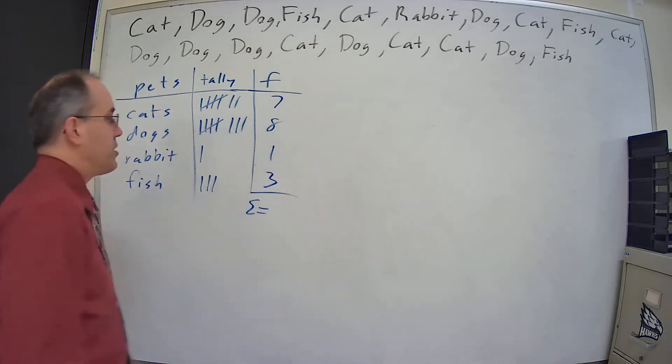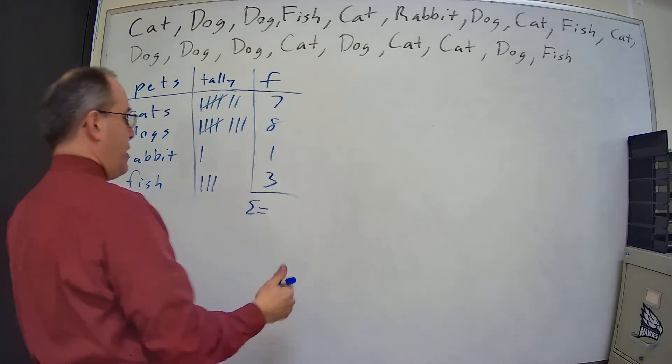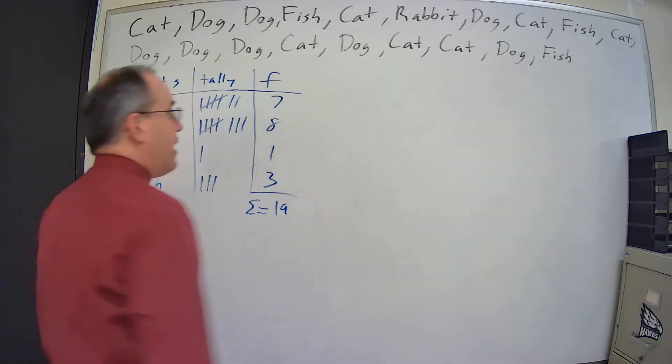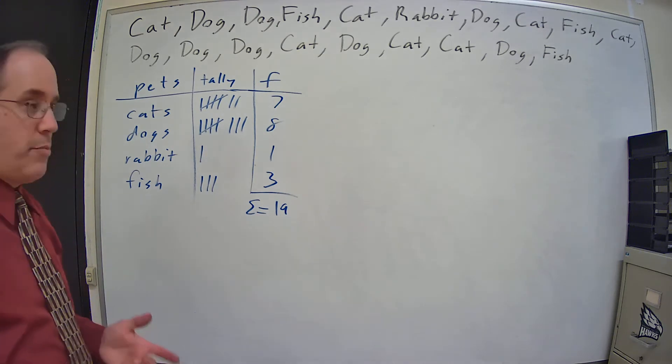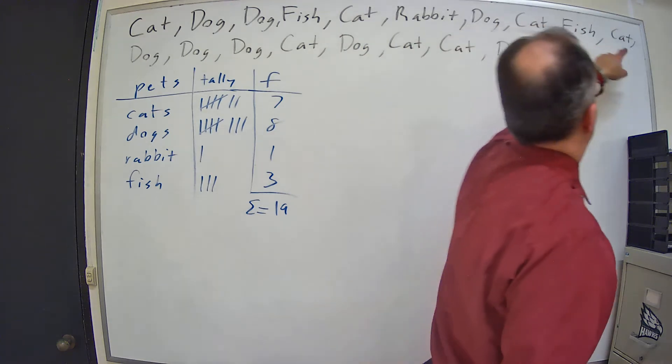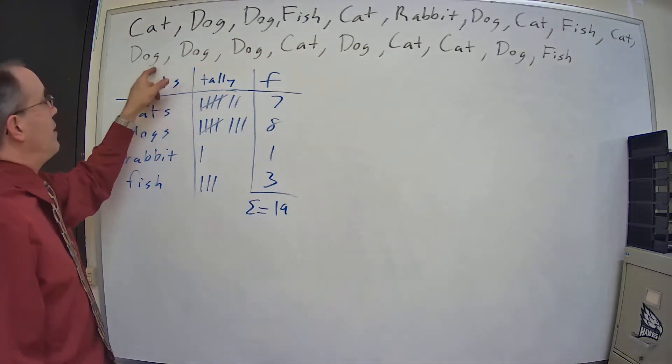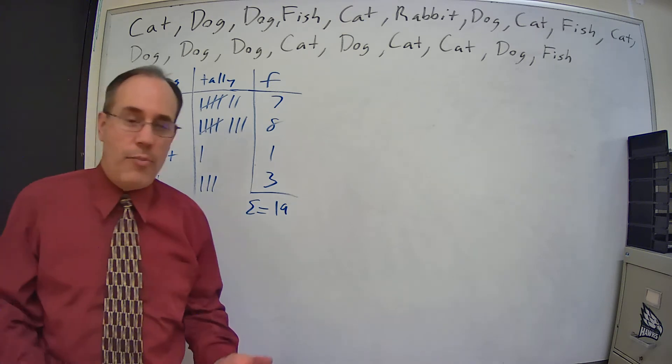Now, I'm going to sum those up to see how many I have. Seven plus three is ten, plus nine is nineteen. And then I'm going to do a quick sanity check just to make sure I got all of them. [Counts 1 through 19] Okay, so I've got all my data points.